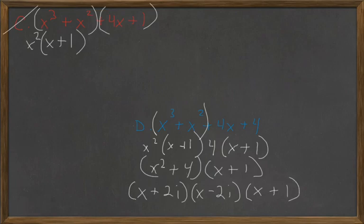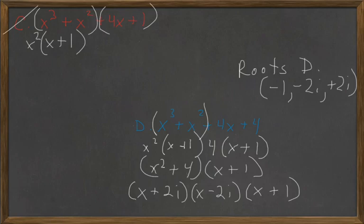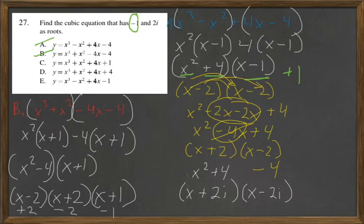And so what are going to be your roots for D? They will be -1, -2i, positive 2i. And if we look, we have a -1 and we have a positive 2i. We look at our original question, find the cubic equation as -1 and 2i as roots. And we find that, sure enough, D is our answer.